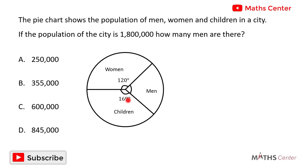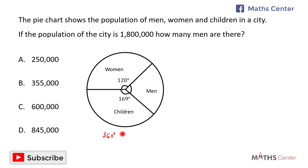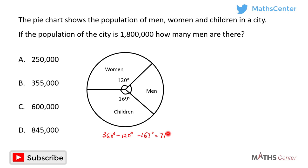From plane geometry, we know that the total angles around a point is 360 degrees. So if the angle of the sector occupied by the women is 120 degrees and the angle of the sector occupied by the children is 169 degrees, then the remainder is the angle occupied by the men. That means the angle of the sector occupied by the men equals 360 degrees minus 120 degrees minus 169 degrees, which gives us 71 degrees.